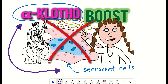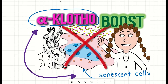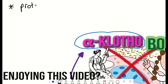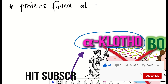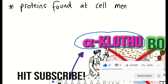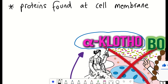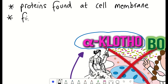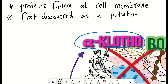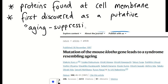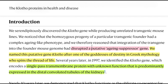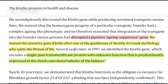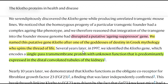So firstly, what are clotho proteins? This is the first time I've mentioned clotho on this channel, though I've been meaning to talk about them for a while. Clotho proteins are proteins found at the cell membrane. The gene encoding the protein was first uncovered in a mouse strain that displayed a complex ageing phenotype suspected to be caused by genetic alteration disrupting a putative ageing suppressor gene. Because clotho is the name of one of the goddesses of destiny in Greek mythology who spins the thread of life, the name was co-opted for this gene.